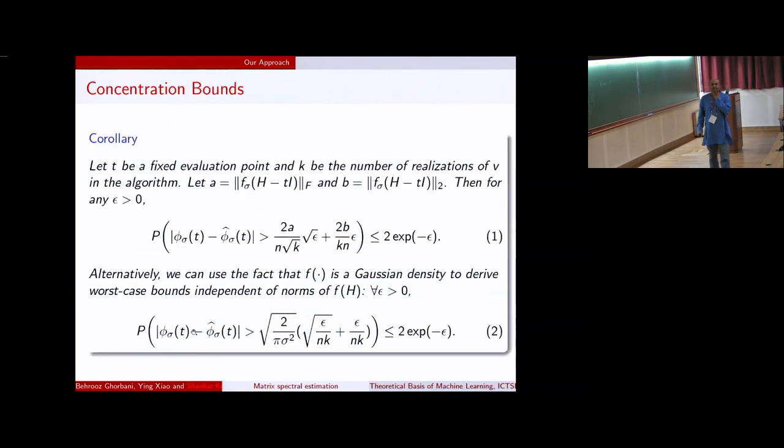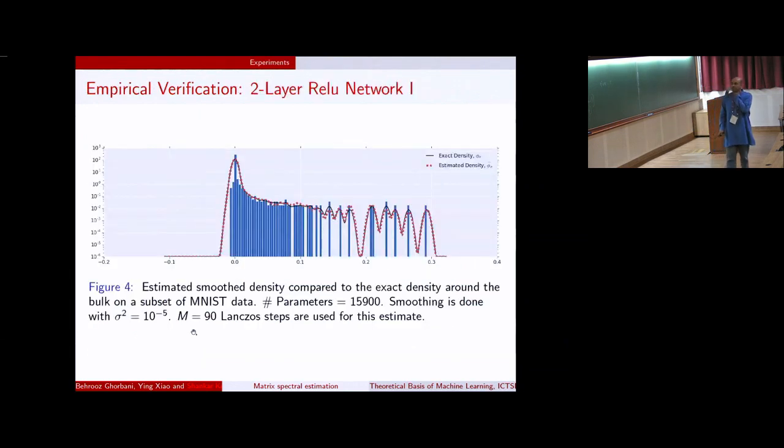One thing that we can show is that because phi sigma looks like an analytic function, we can look for error bounds in terms of the approximation. And what we can show is that the probability this deviates too much from an epsilon parameter goes down exponentially. So it is extremely tight and it converges very quickly.